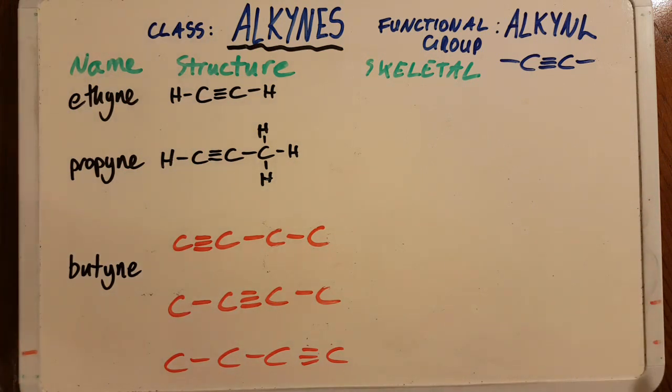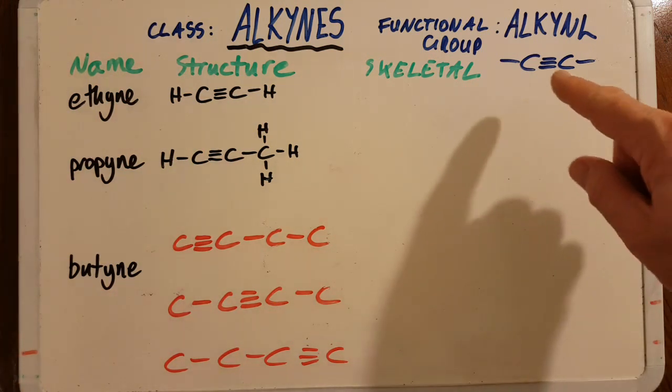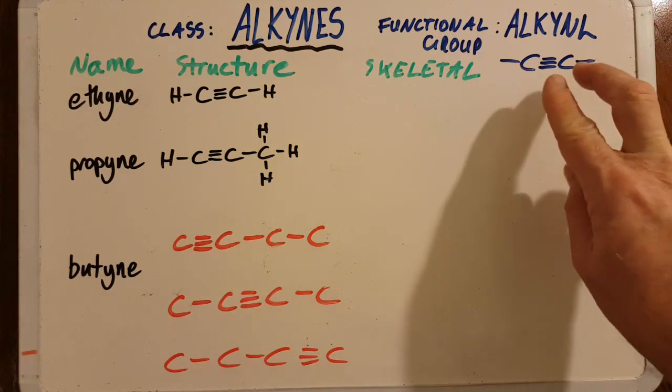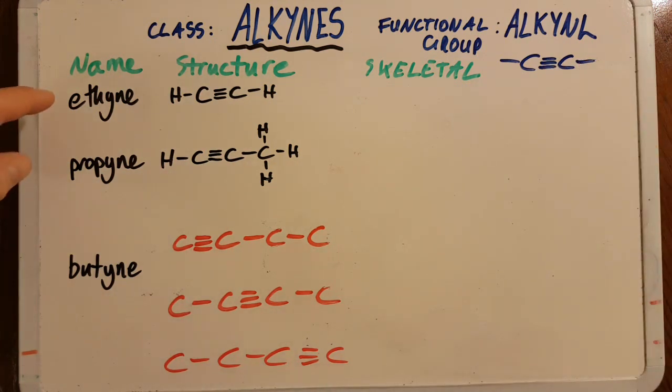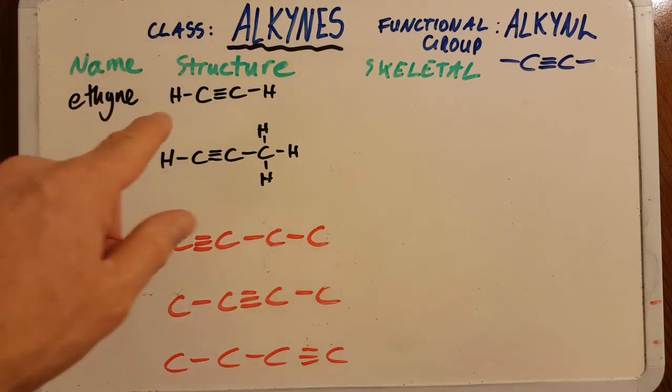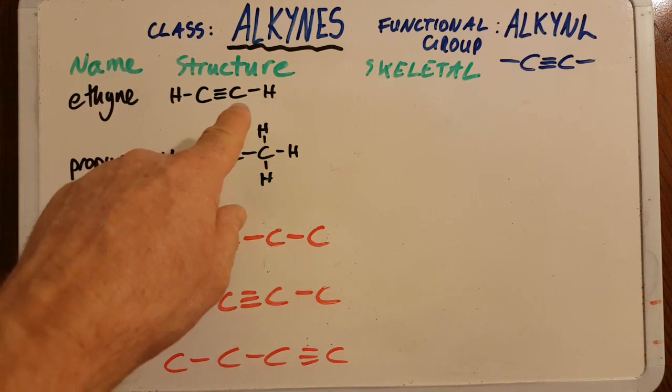There can't be any methyne because meth implies one carbon and the minimum you need is two. So the first alkyne is ethyne and you need to know up to six carbons. That's ethyne, two carbons, popped on the hydrogens to make sure that every carbon now has four bonds.